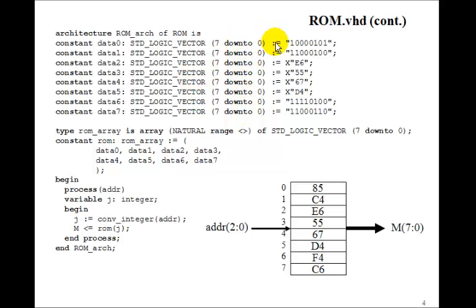We can assign the values either as a string, so the 85 can be a 1, 0, 0, 0, 0, 1, 0, 1. Here's a C4.